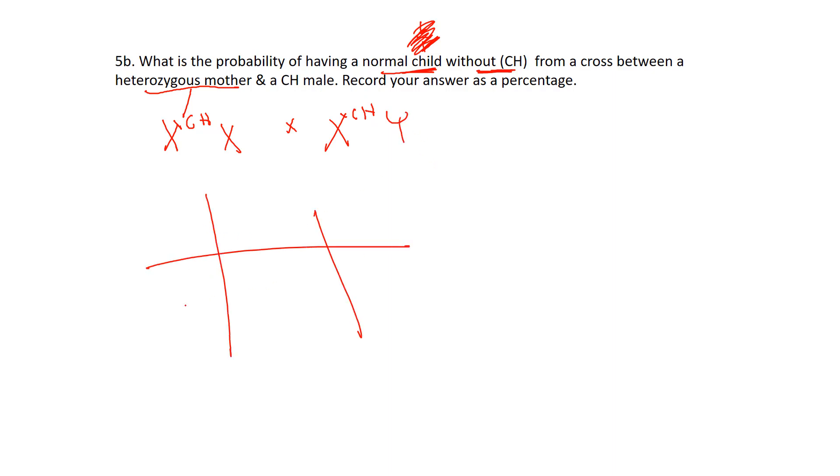And we're just going to do a quick Punnett square. Put her across the top, isolate them into eggs, put him down the side, isolate them into sperm. And then bring them together. So X^CH, X^CH, that is a CH female. And again, the question is asking for a child without CH, so obviously that's not going to be one of them. That's going to be a CH female. X with a CH and a Y, that's going to be a CH male. And an X with a Y, there's our lone normal male.